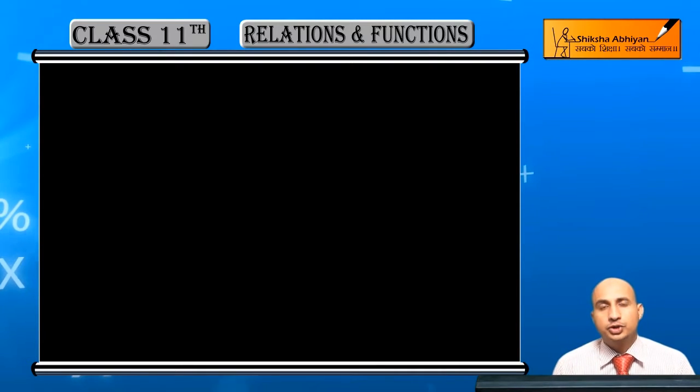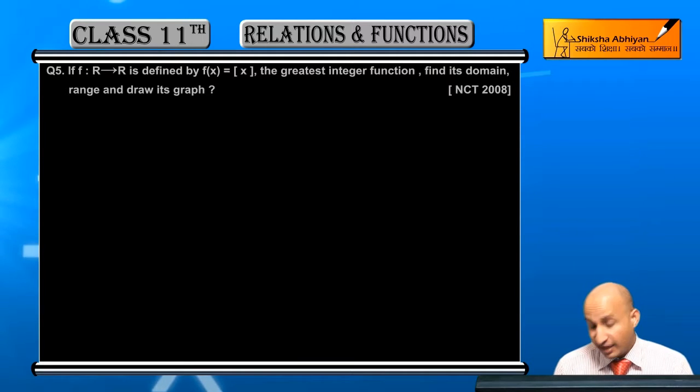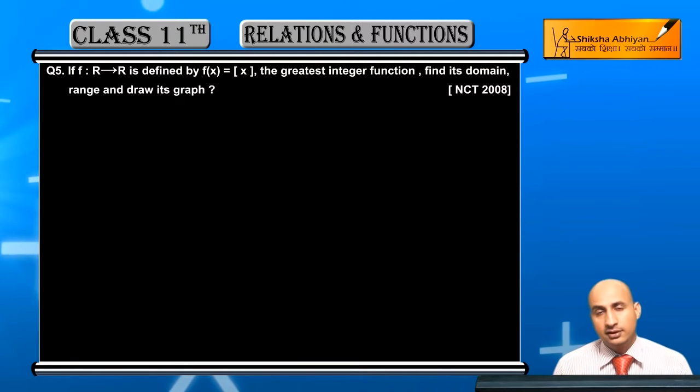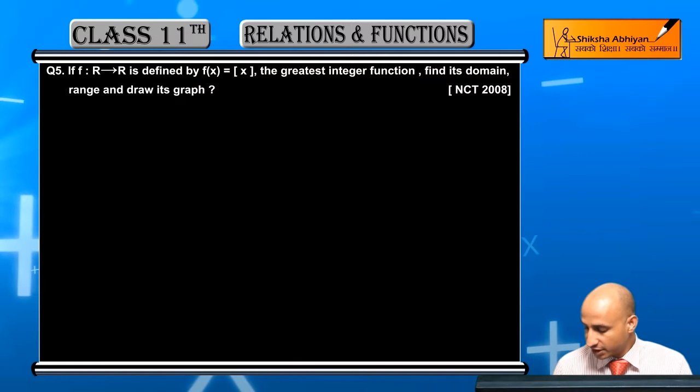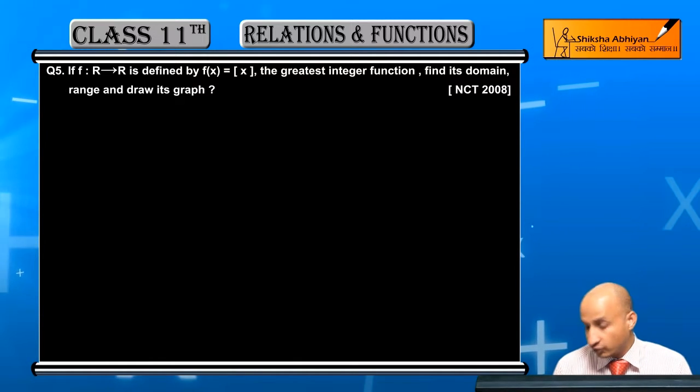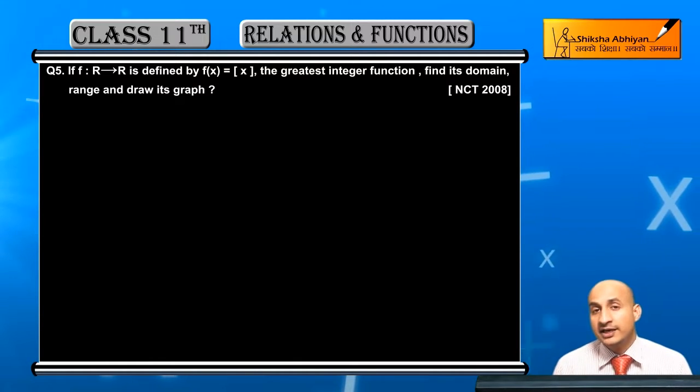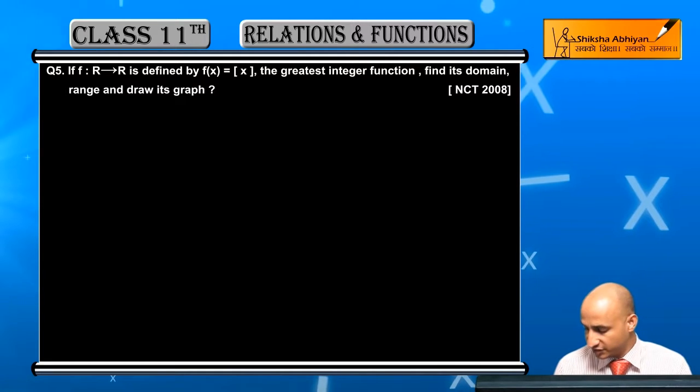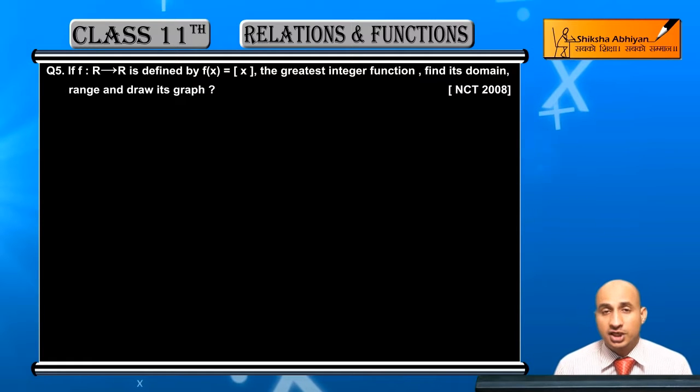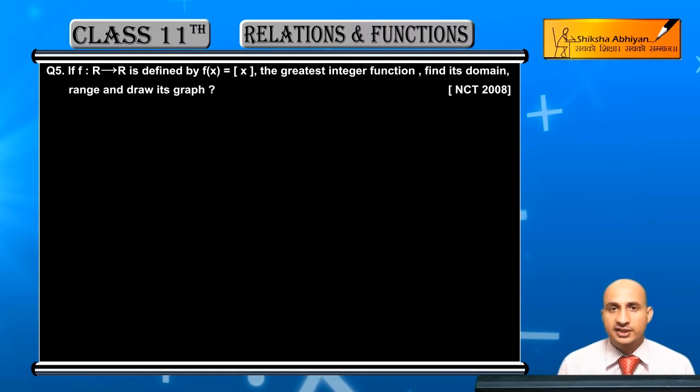Now student, let's look at question 5. Question 5: if f is a real to real function defined by f(x) equals the greatest integer function, find its domain, range and draw its graph. You need to find the domain, range, and graph.